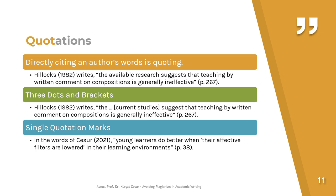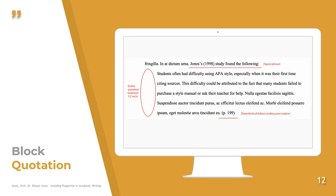For sentences with more than 40 words, you need to use block quotations. In block quotations, the entire quotation is indented, and you still need to specify the page number at the end. If you haven't read the work you are referring to, give the reference for the secondary resource. For example, if the idea belongs to Köksal but you read it in Cesur's (2021) work, you cite Cesur's work and can check page 21 for Köksal's idea.